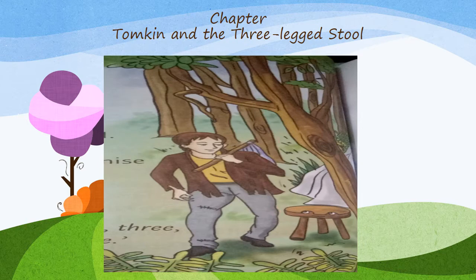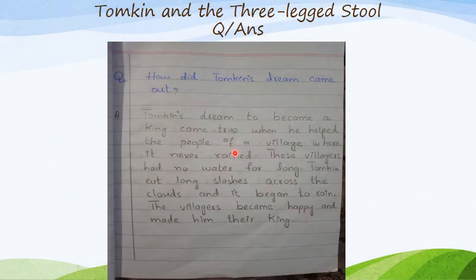Today we will do written work in our copy and discuss how you will write in the copy. First, you are going to write the chapter's name — Tomkin and the Three-Legged Stool — on the top, and the Question and Answers heading with blue color. After that, we will start writing. For each question, you will only use blue color.